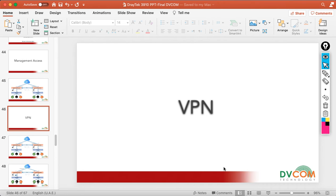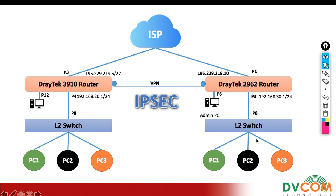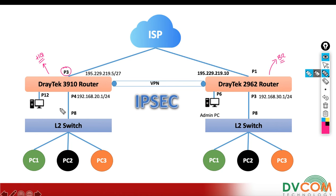Before I start the configuration, let me show you the lab topology. We have two locations: HQ and Branch. In HQ, we have a static public IP 195.229.219.5 connected on port number 3, and the internal network is 192.168.20.x. In the branch, we have 195.229.219.10 connected on port number 1 as the static public IP.